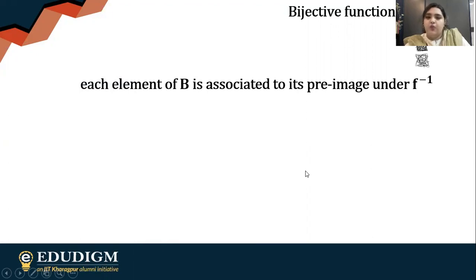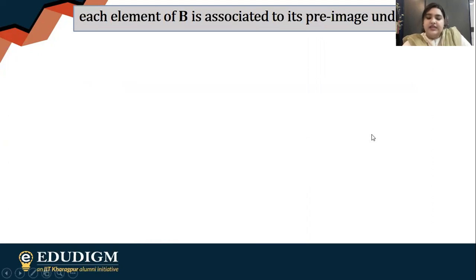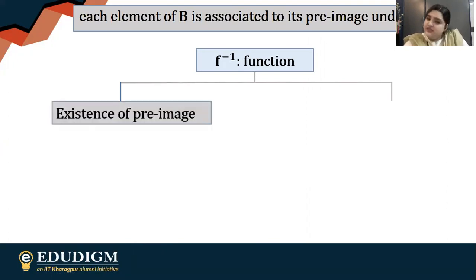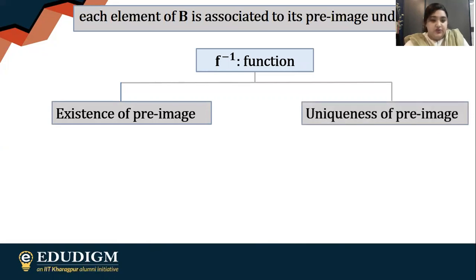The obvious question is why do we need it to be a bijective function? We are talking about a function after all. It needs the association of each and every element of the domain with its pre-image. Whenever you think about associating any value to an output, you want the existence of that as well as uniqueness of that.